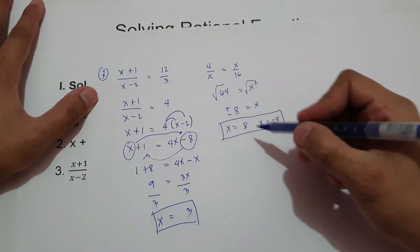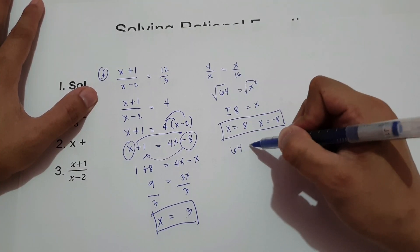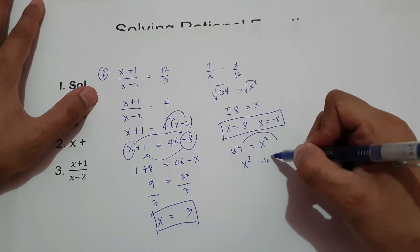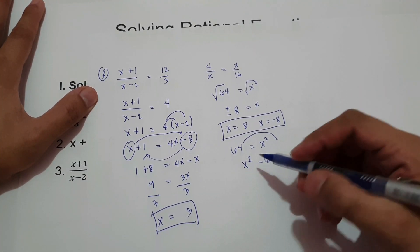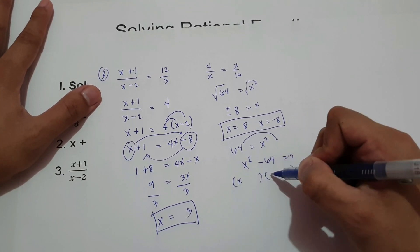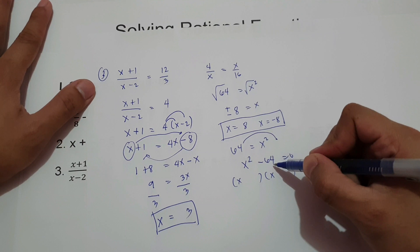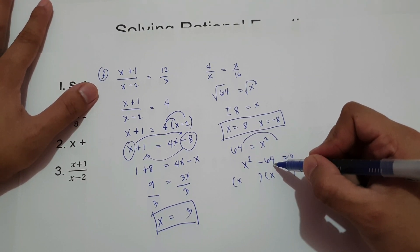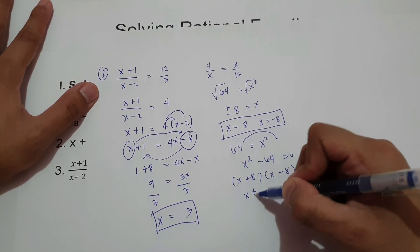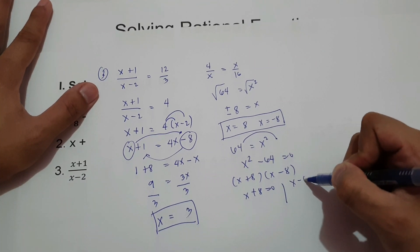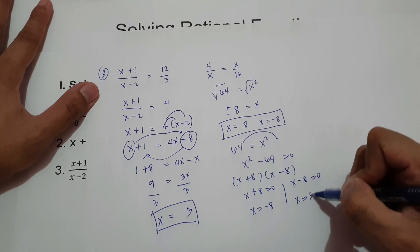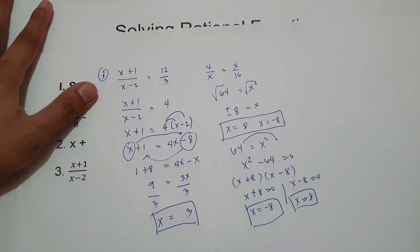Alternatively, you can move 64 to the side of x squared: x squared minus 64 equals 0. Then factor using difference of squares. The square root of x squared is x, and the square root of 64 — the numbers that multiply to give negative 64 and add to give 0 — are positive 8 and negative 8. So x plus 8 equals 0 and x minus 8 equals 0, giving x equals negative 8 and x equals 8. Those are the values of x.